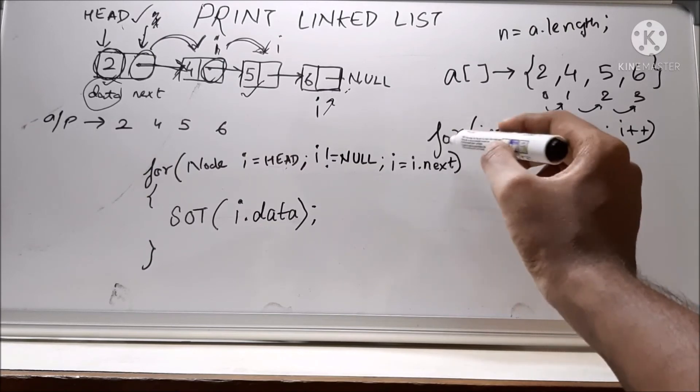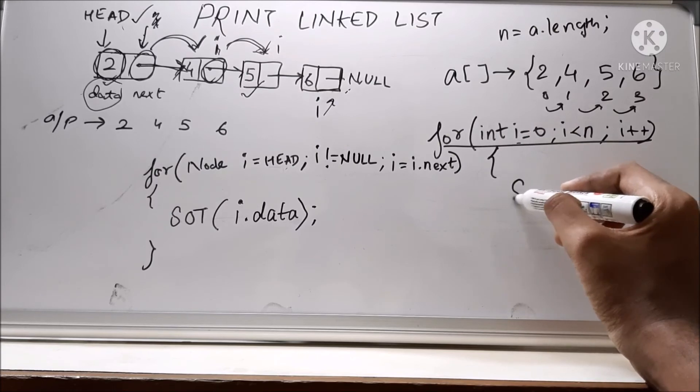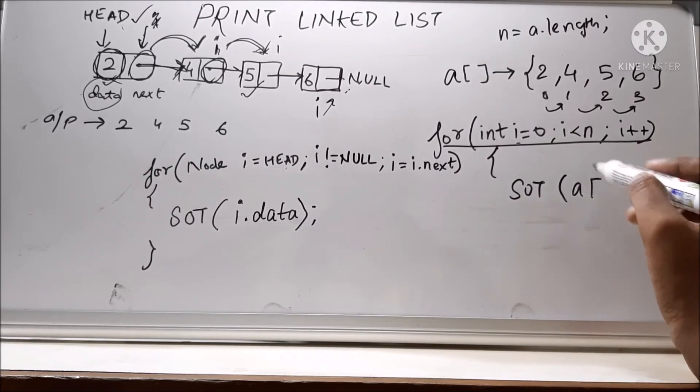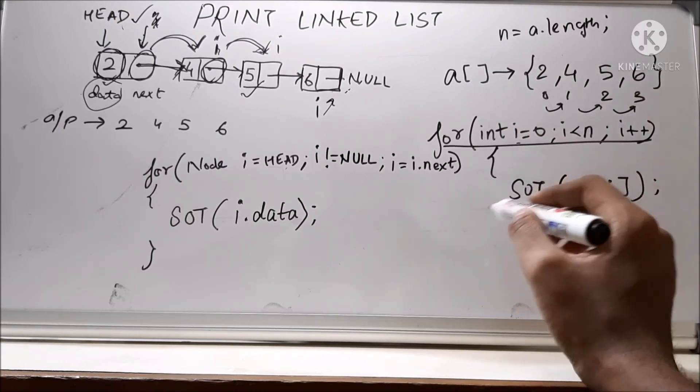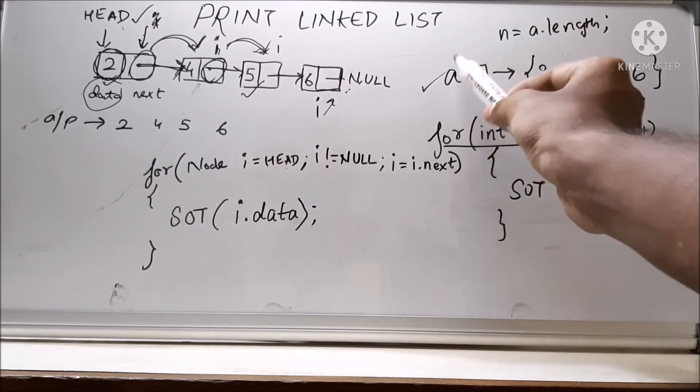Here what we used to do. For this for loop. We used to do sys out. A is the array name. And the index location.